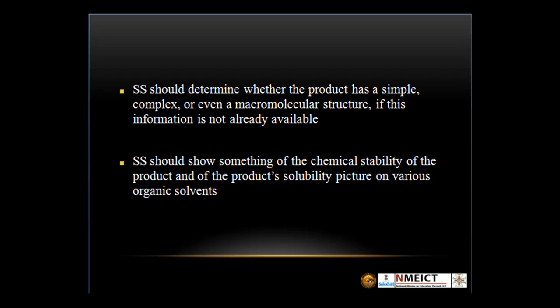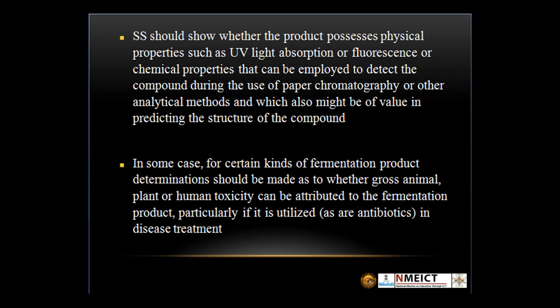Secondary screening determines whether the product has a simple, complex, or even a macromolecular structure — if this information is not already available, newly isolated organisms may be of high importance. It should also show something of the chemical stability of the product and the product's solubility in various organic solvents. Furthermore, secondary screening should show whether the products have physical properties such as UV light absorption or fluorescence, and chemical properties that can be employed to detect the compound during paper chromatography or other analytical methods, which might also be of value in predicting the structure of the compound.